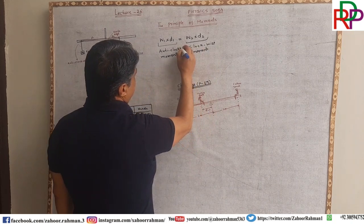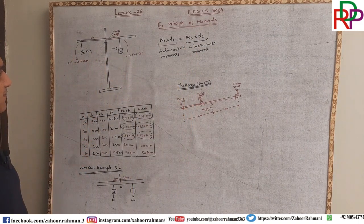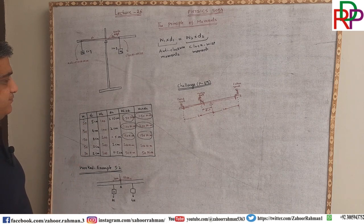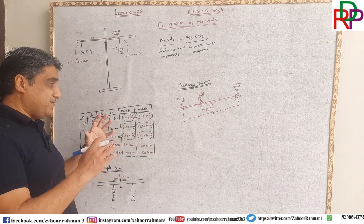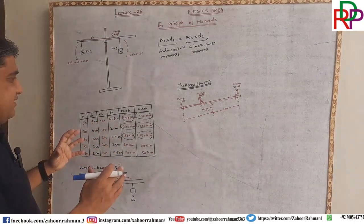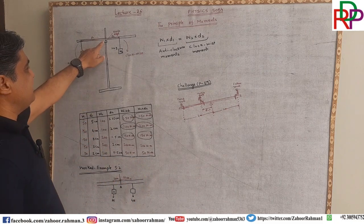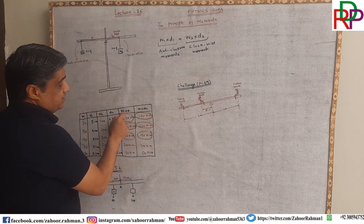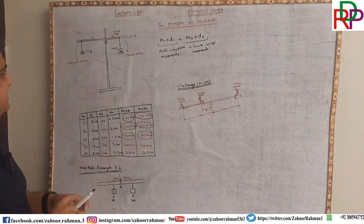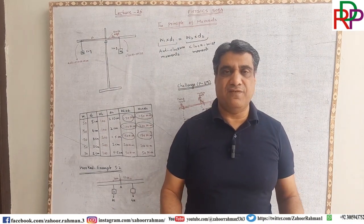This is the anticlockwise moment and that is the clockwise moment. From the observation, we are getting the conclusion that W1 times D1, for different perpendicular distances from the pivot point — which is the knife edge — are equal. On both sides, when we vary the distances, they give us the same values.